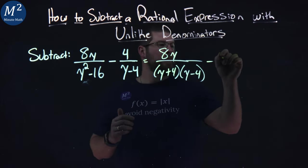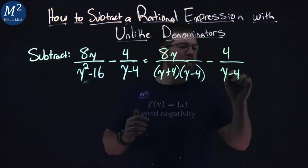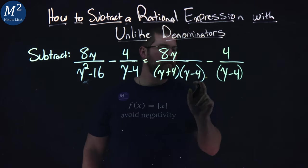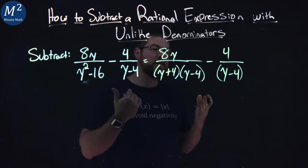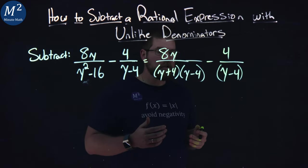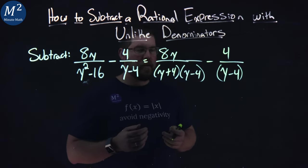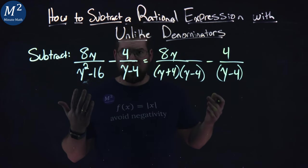The second expression is 4 over y minus 4. We're almost there, right? Y minus 4, y minus 4. What has to be added to the second equation in the denominator to keep them the same? That's just y plus 4.